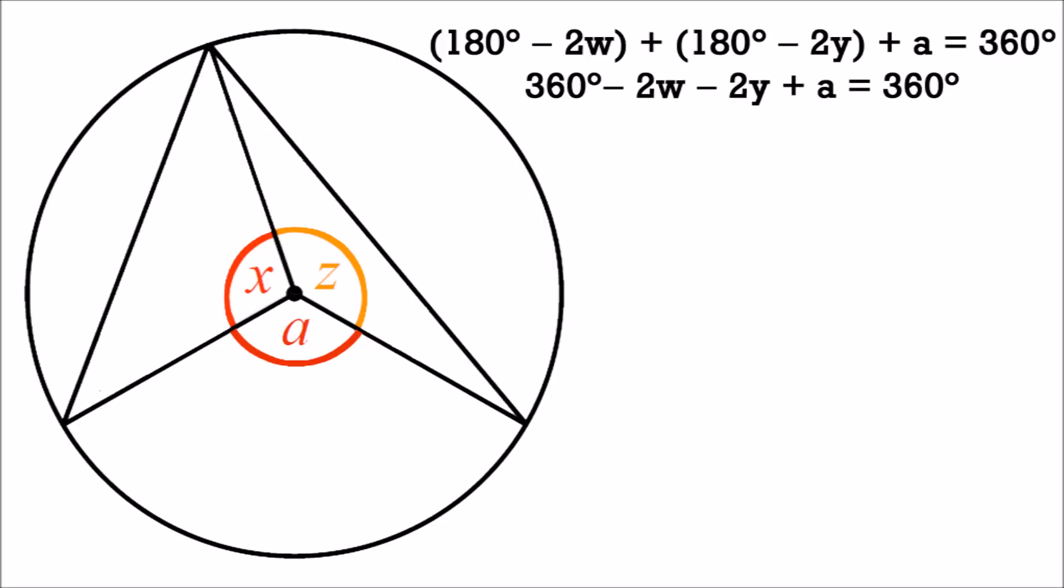Substituting our expressions, we get (180 minus 2w) plus (180 minus 2y) plus a equals 360 degrees. Simplifying: 360 minus 2w minus 2y plus a equals 360, so a minus 2w minus 2y equals 0. As a result, a equals 2w plus 2y, and therefore a equals 2 times (w plus y).